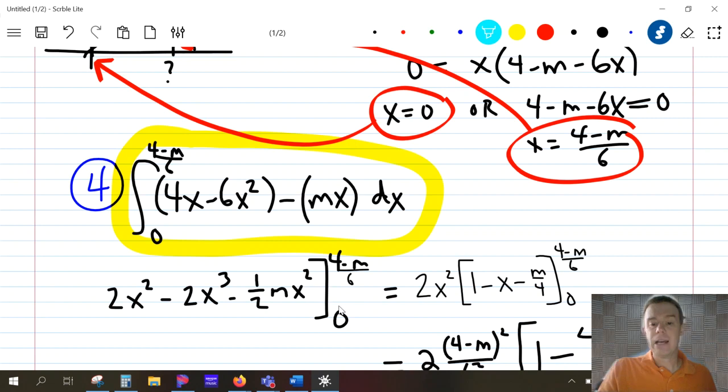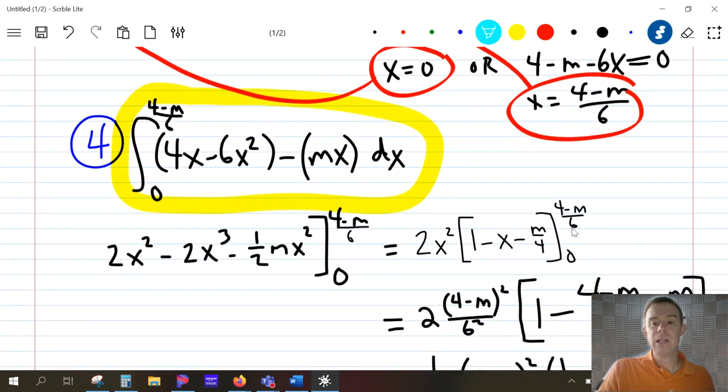Now, before I apply those limits of integration, I'm actually going to factor out 2x², because 2x² shows up in all of these terms. So when I factor out 2x², 2x² comes out front, and I'm left with this in the brackets. And when you plug in the (4 - m)/6 into the x, that's going to go here, I'm going to square it, and I'm going to square the 6. And then it's also going to go here. So I'm going to have 1 minus this guy, minus m/4. Now notice when you plug in zero, the zero in front here is going to cancel everything out. So the second piece of the integration just disappears.